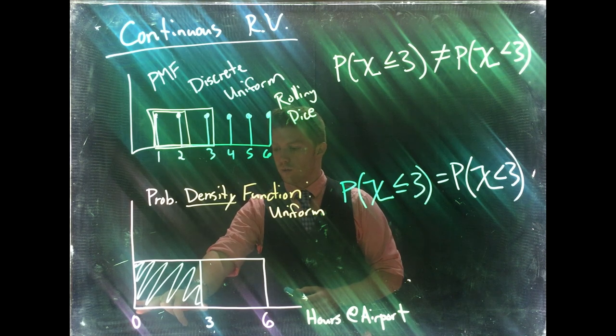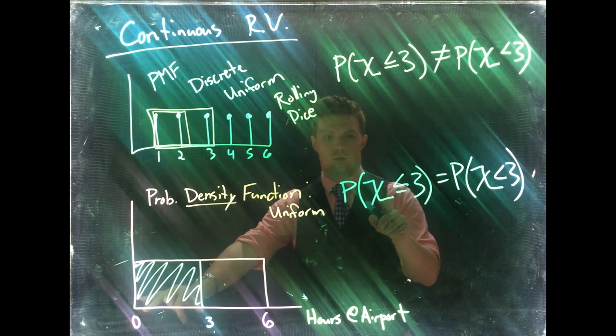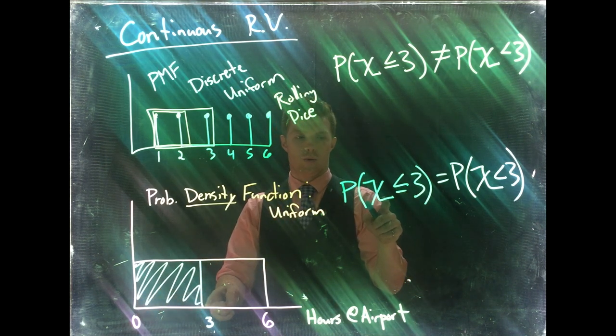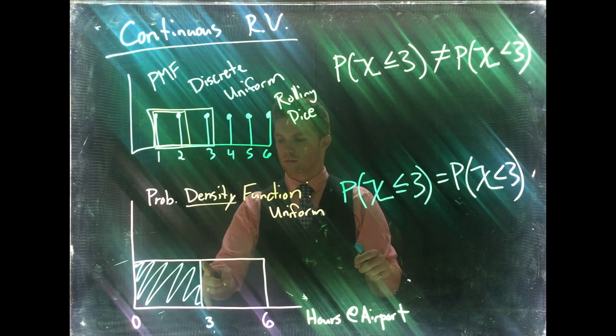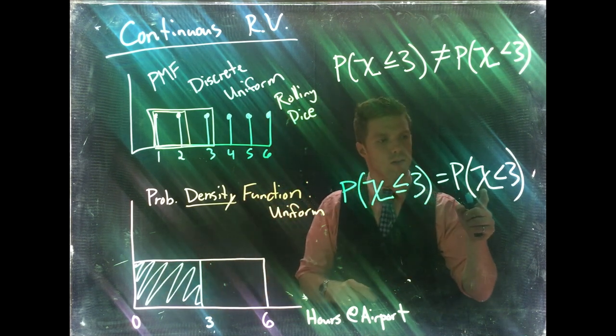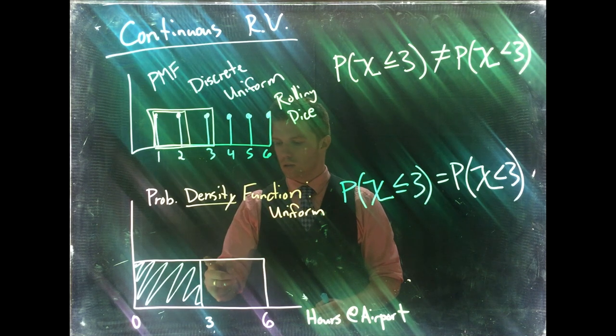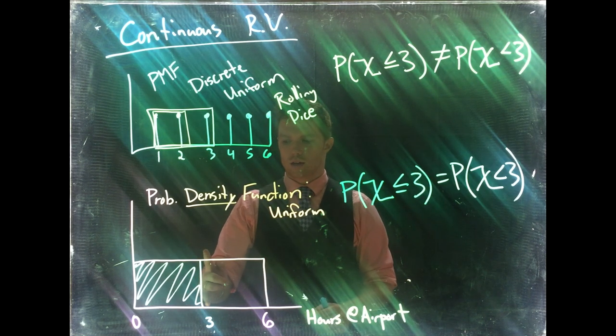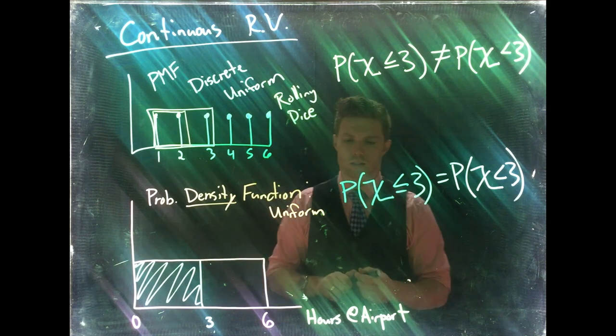But so from zero to three, so from being less than or equal to three, we would go okay all the way to three, and that would be our probability. Now over here, the probability of being less than three, well our line doesn't move. It's still at the same spot. And here's the reason.